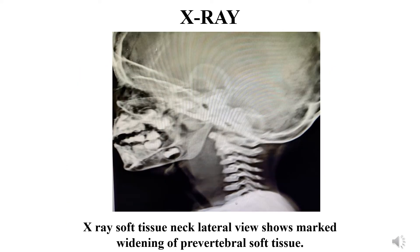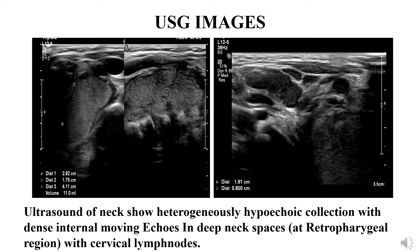X-ray soft tissue neck lateral view shows marked widening of prevertebral soft tissue. Ultrasound of neck shows heterogeneously hypoechoic collection with dense internal moving echoes in deep neck spaces at retropharyngeal region with cervical lymph nodes.